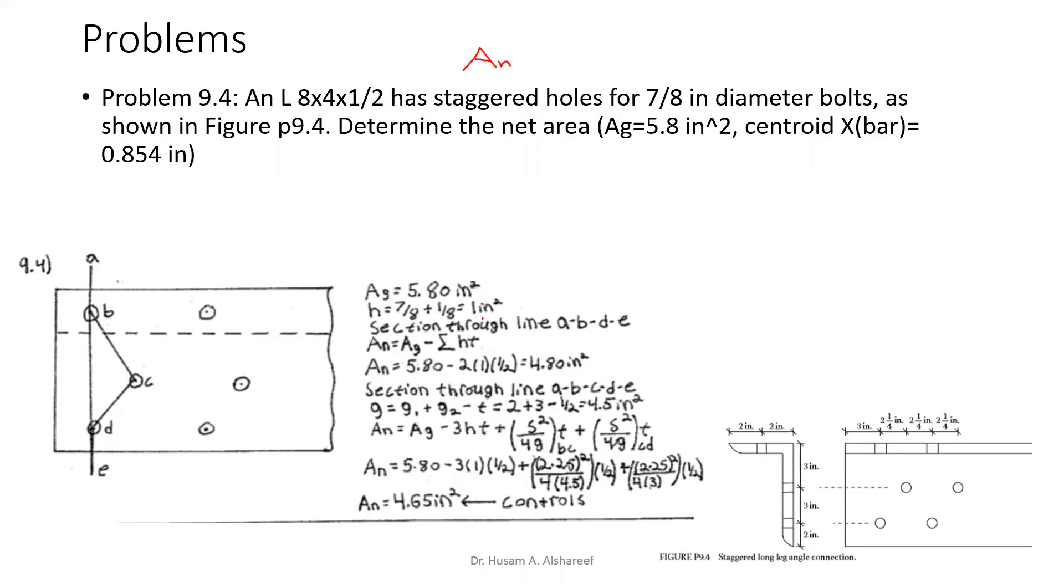Scenario one is where it's going to fail through a vertical line through two holes: A, B, D, and E. The second scenario is where we're going to fail according to the stagger pattern: A, B, C, D, and F. So we're going to determine the A_n for scenarios one and two and see which one controls.